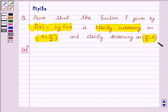So we have f(x) = log sin x. Therefore, f'(x) = (1/sin x) · cos x, and this is equal to cot x.